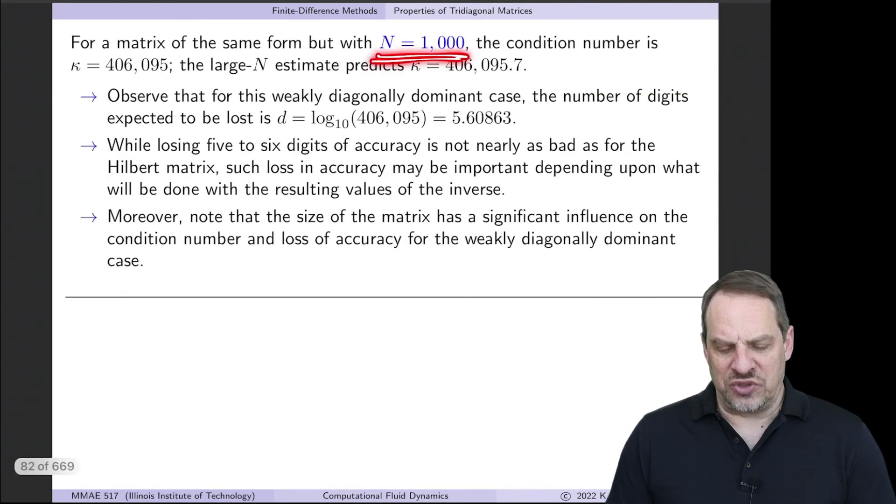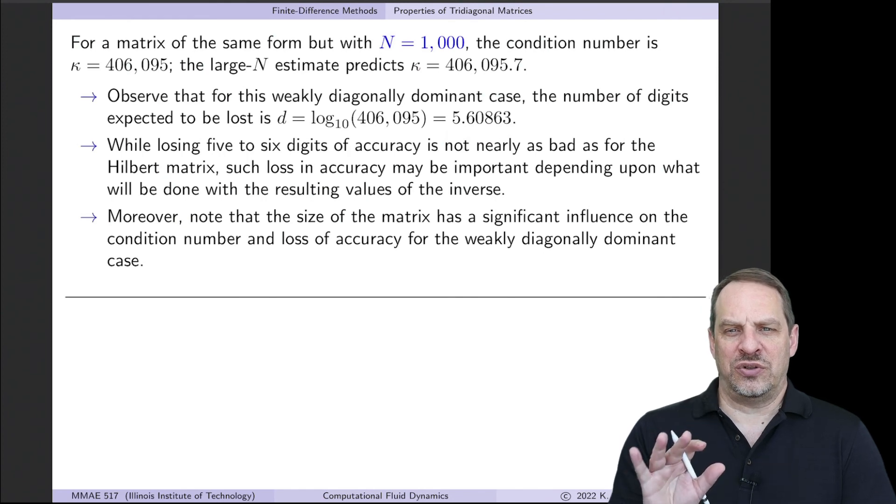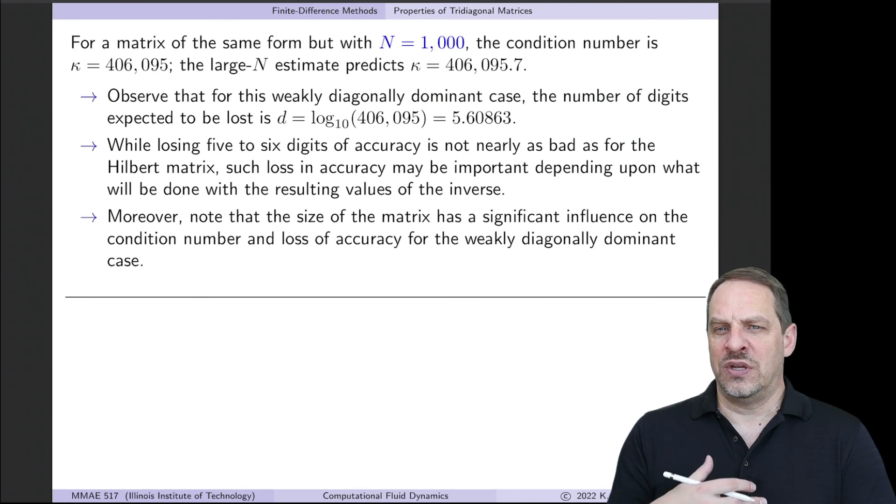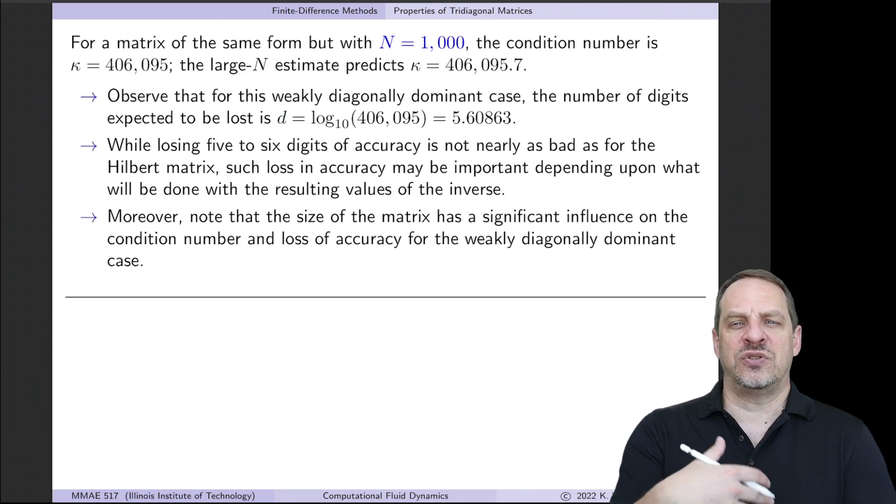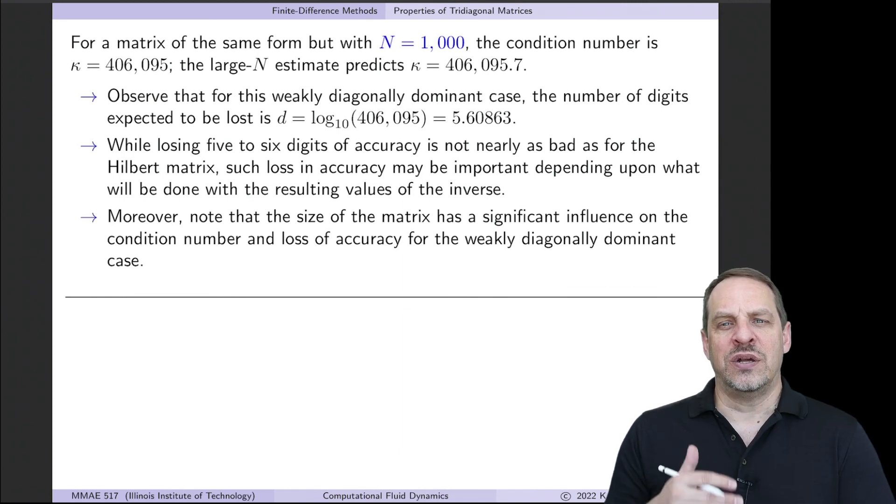Now for 1,000. So much larger N. Because the condition number is going up like N², we do expect a much larger condition number. So it's going up to 406,000, which again is very, very close to the large N estimate. So now log base 10 of 406,000, well that's between 5 and 6. So we now expect to lose between 5 and 6 digits of accuracy. That is more significant. That's more concerning. So I have 16 to start with. If I lose 5 or 6, I have roughly 10 left. If that's the final answer that I'm looking for, that's probably okay. If I'm going to do something more with these numbers, do some more calculations with additional roundoff errors, then maybe that's not. But you can see the effect of increasing N on this weakly diagonally dominant case. It gets quite ill-conditioned rather quickly.